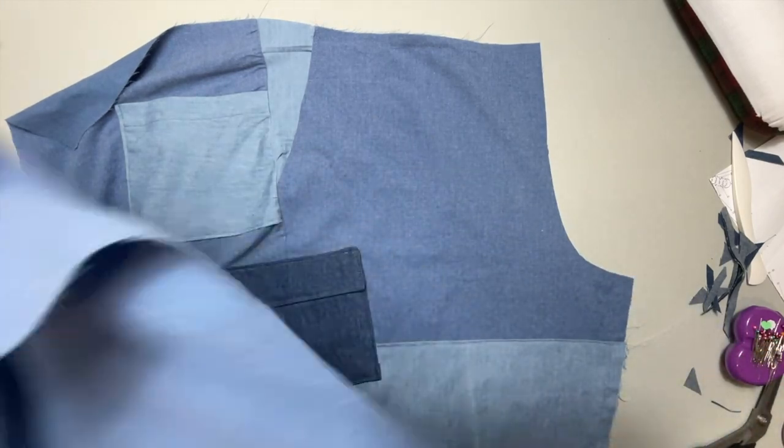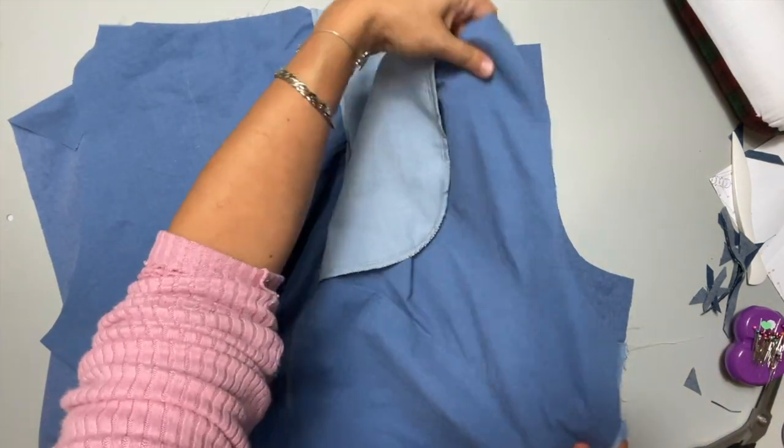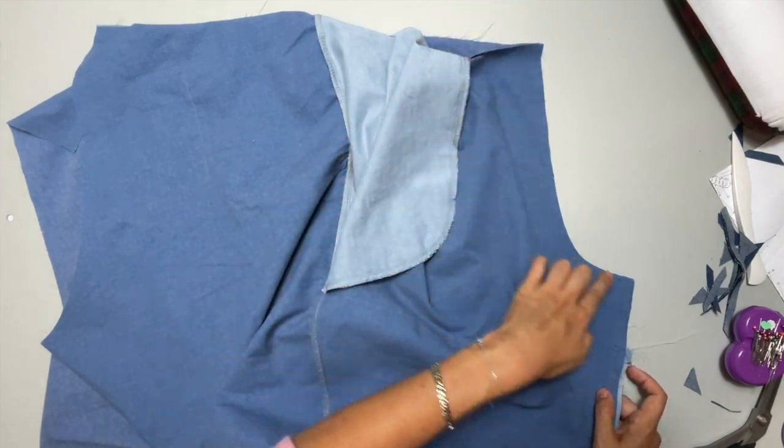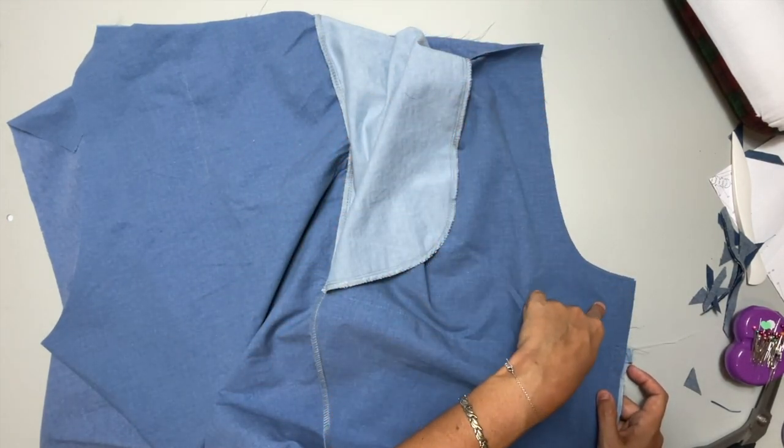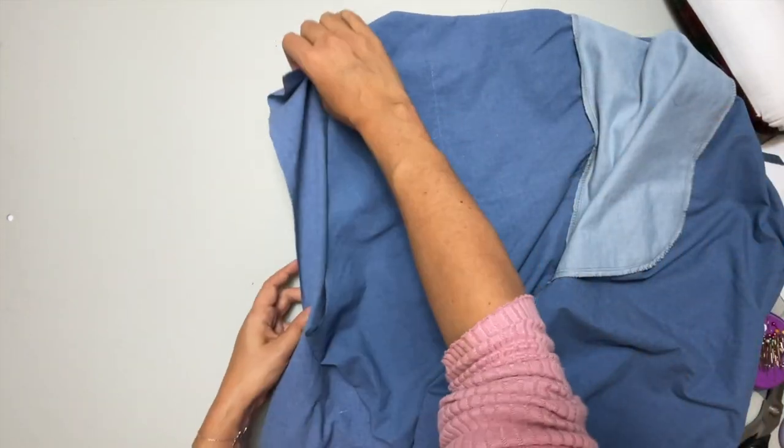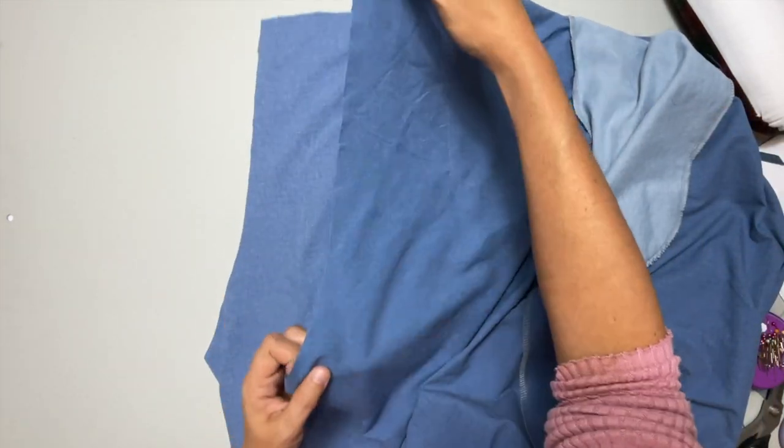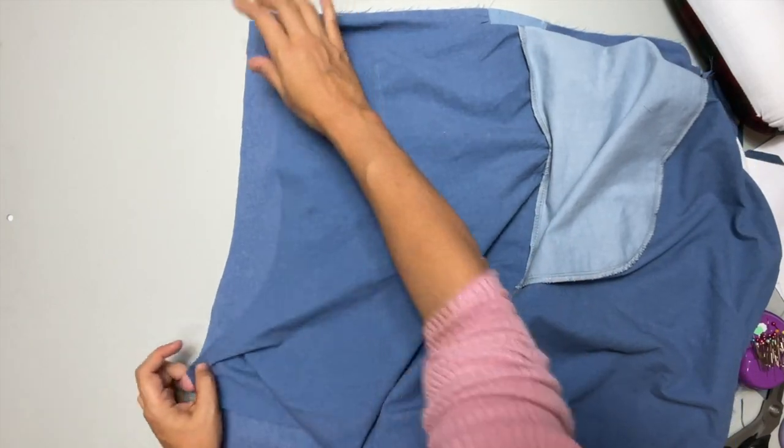So right sides together, we are going to sew and finish the front, and then you can just scoot it over and we are going to sew and finish the back.